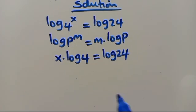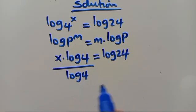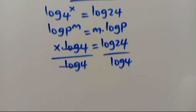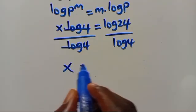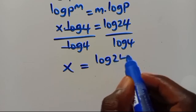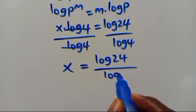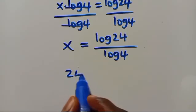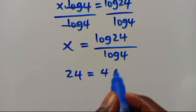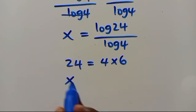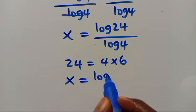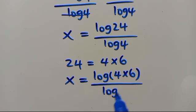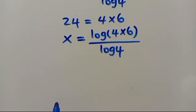From here, let's divide by log 4, so we have x equals log 24 over log 4. Then let us recall that we can write 24 as the product of 4 times 6, so x equals log(4 times 6) over log 4.